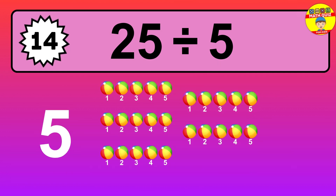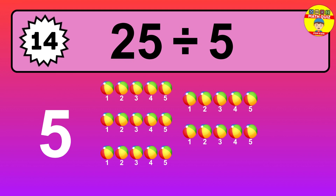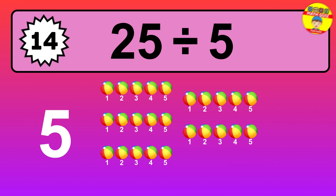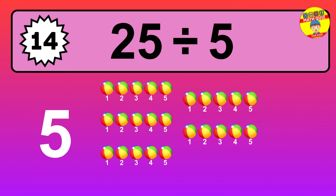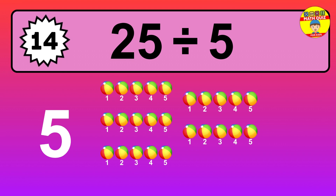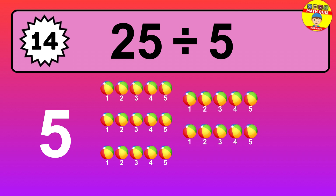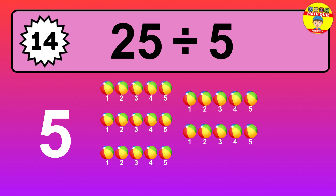Let's go to the solution. Divide the number 25 by 5. Each group contains 5 units, so dividing 25 by 5 results in 5 equal groups. Thus, the result is: 25 divided by 5 equals 5.